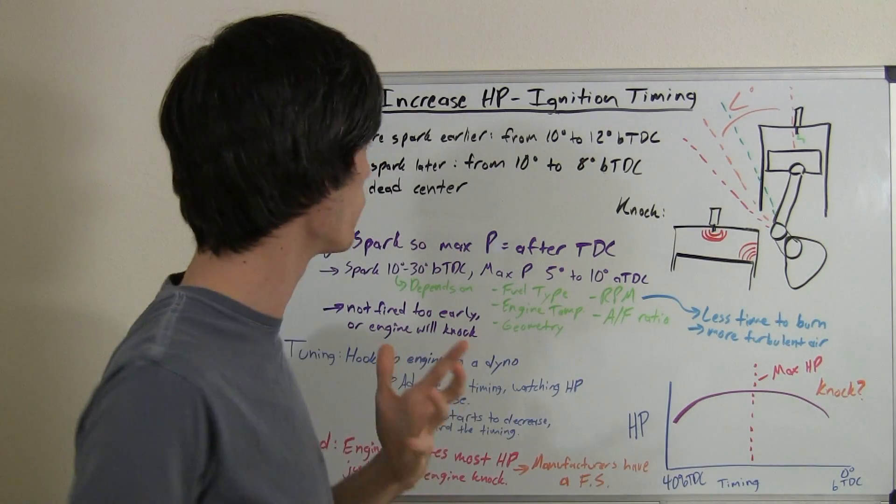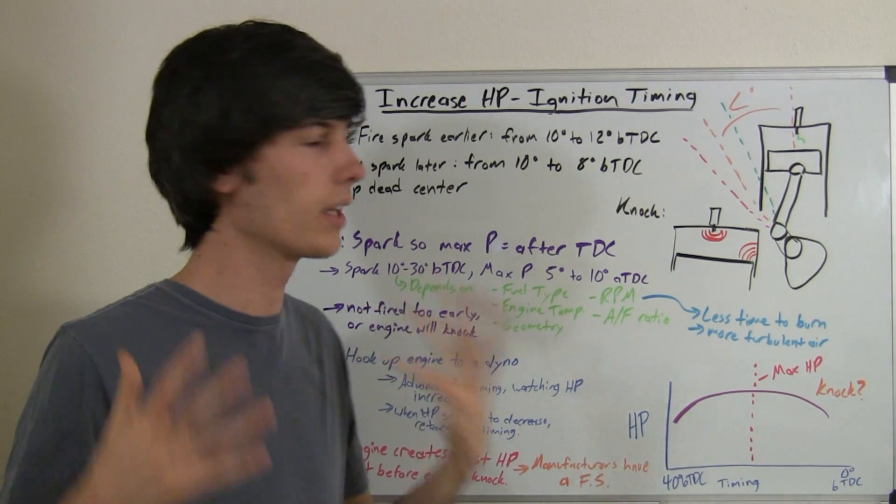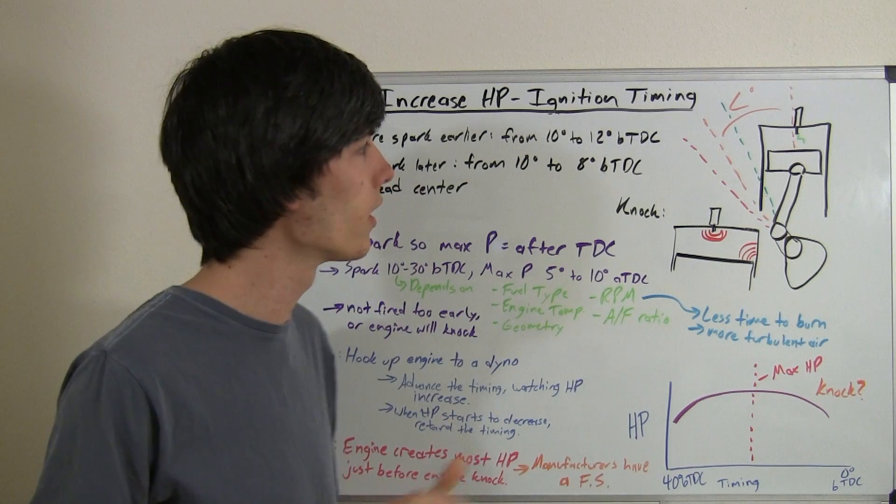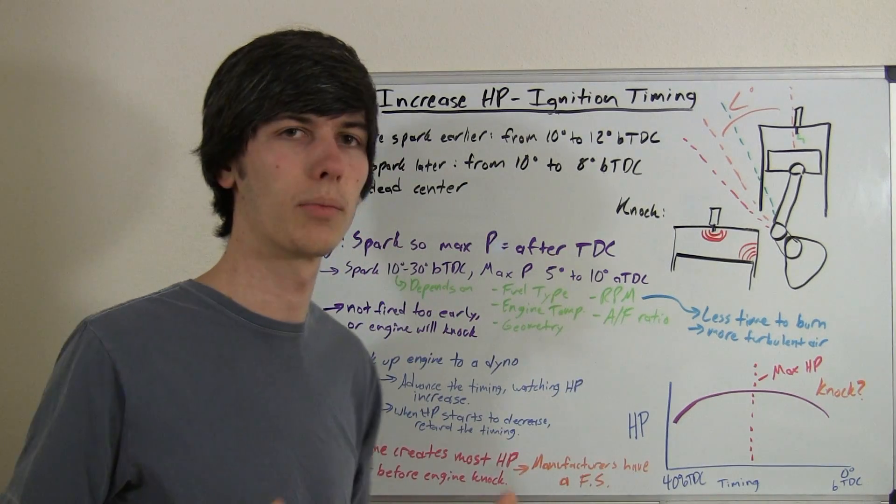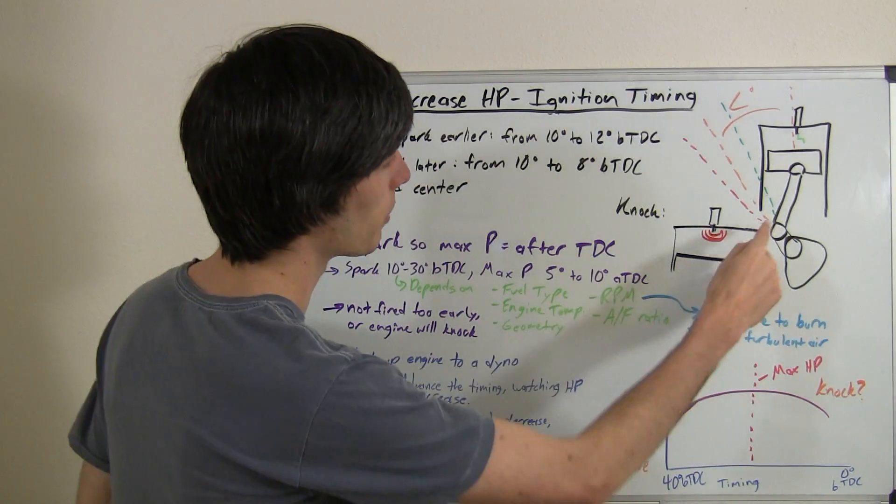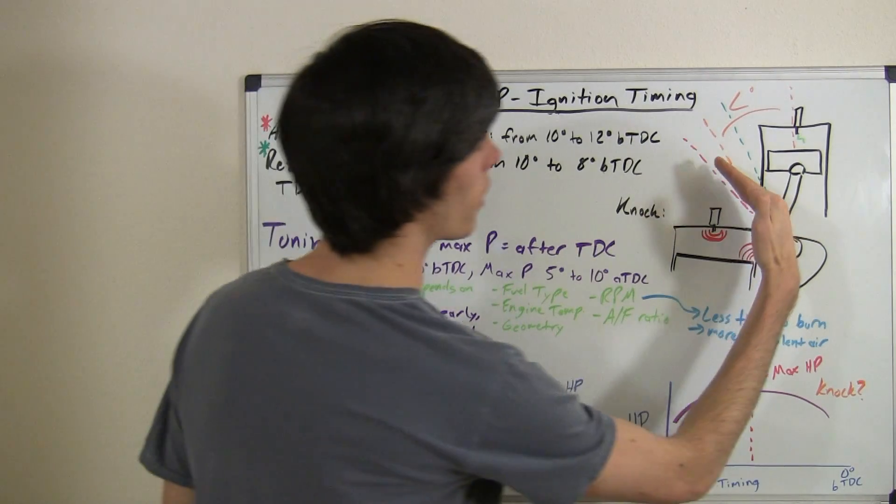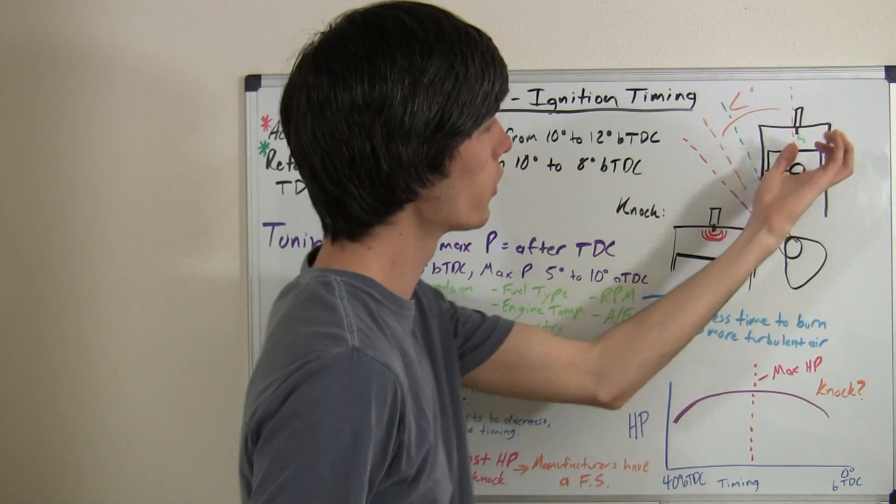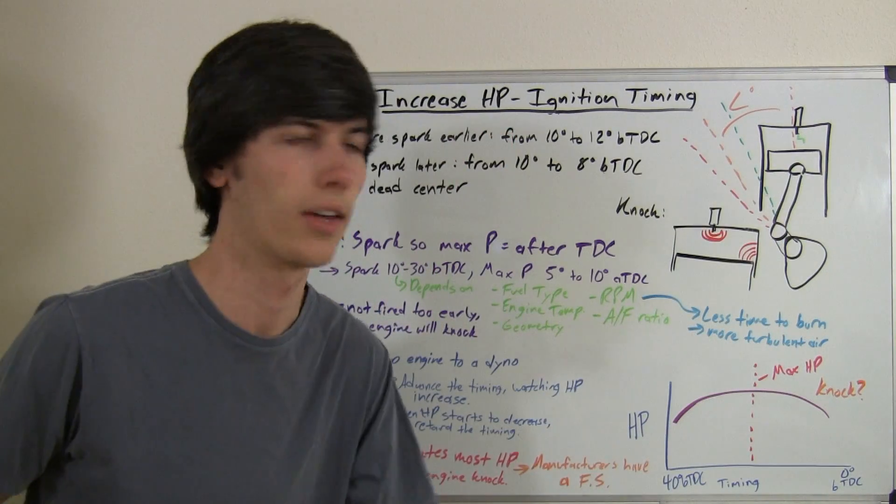Retarding the timing of an engine means you're firing the spark later. So if you were firing at 10 degrees before top dead center and you then alternate it to 8 degrees before top dead center, that'd be retarding the timing. So that's what I've got in green here, and you'd be firing there rather than here, firing the spark to ignite the air-fuel mixture inside of the cylinder.